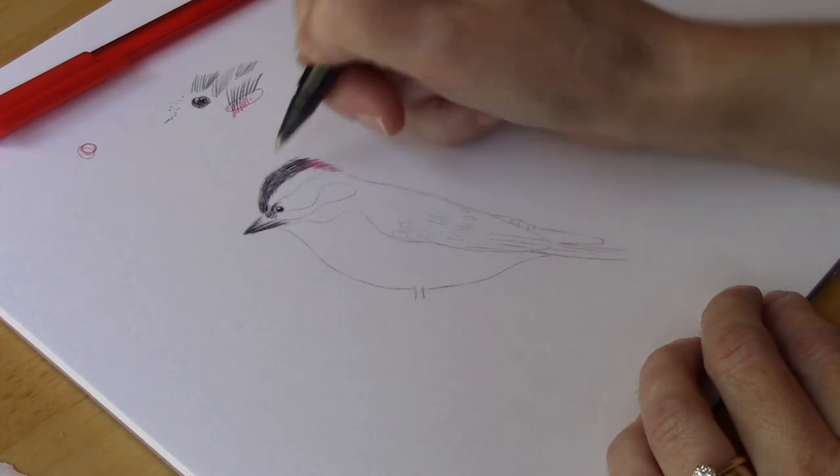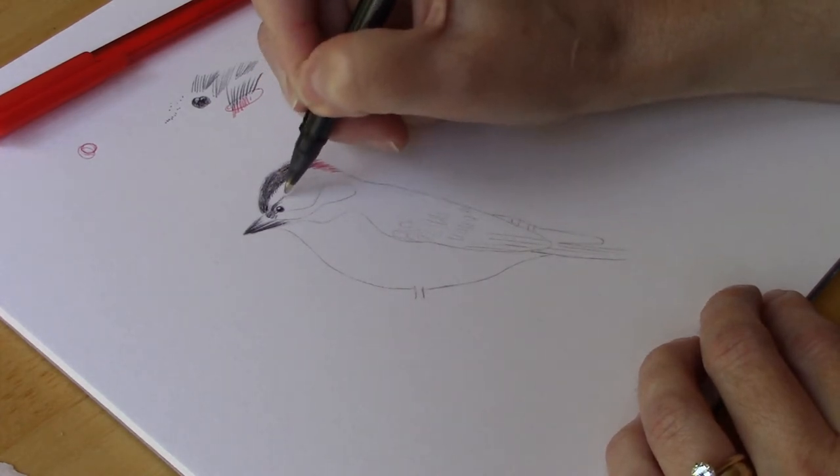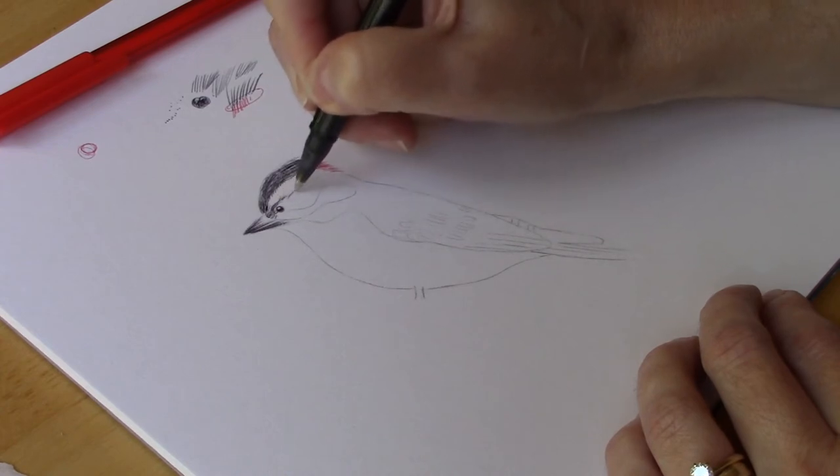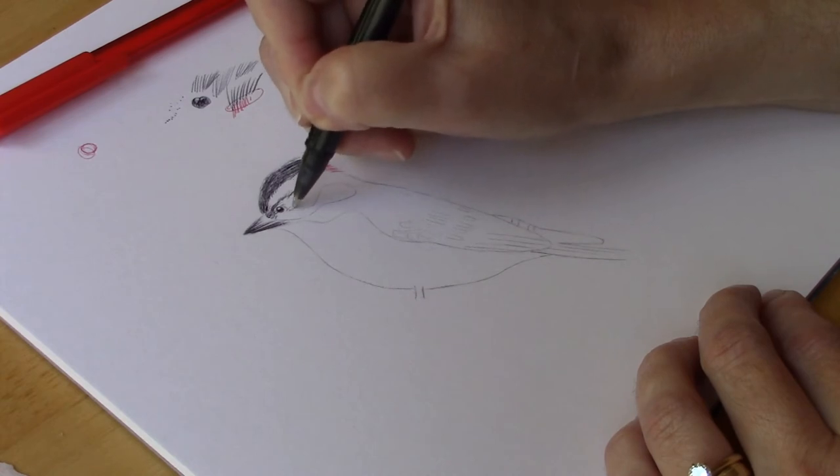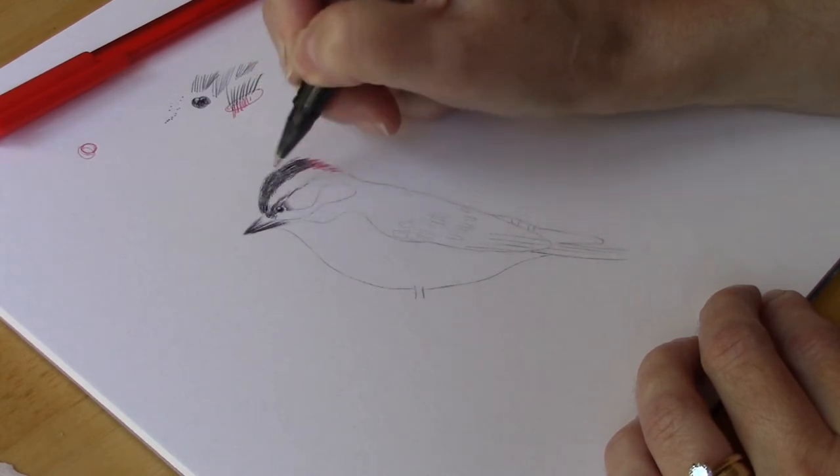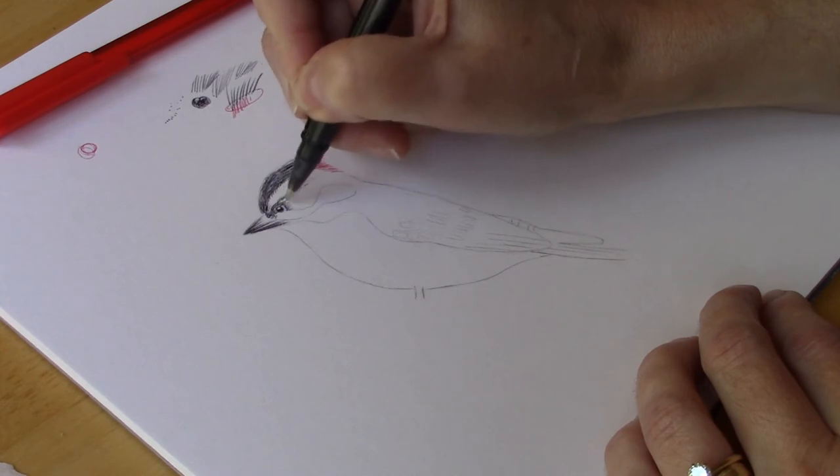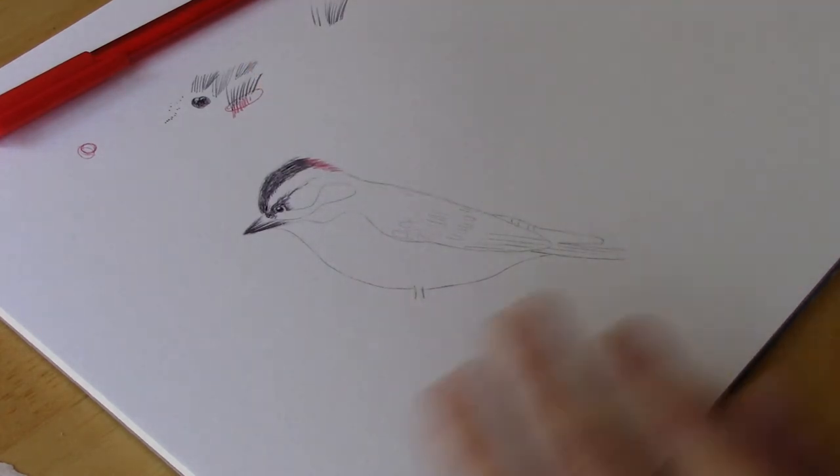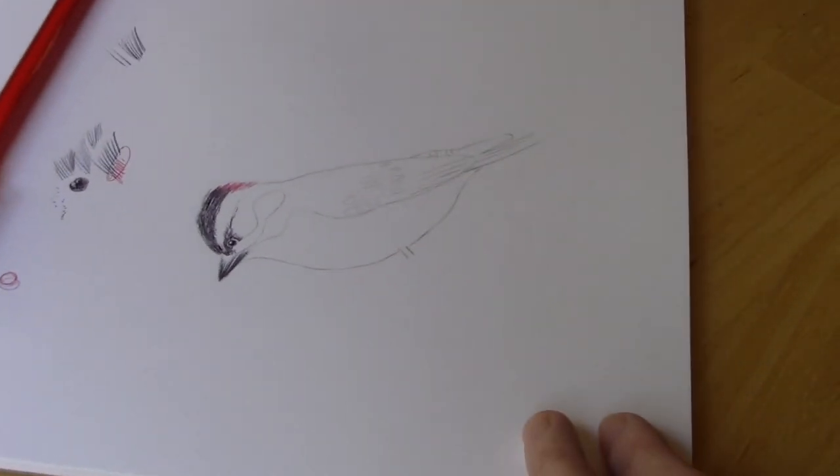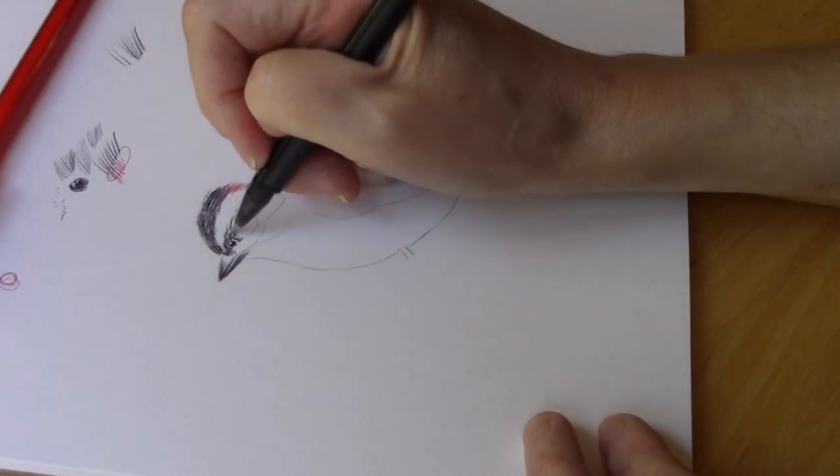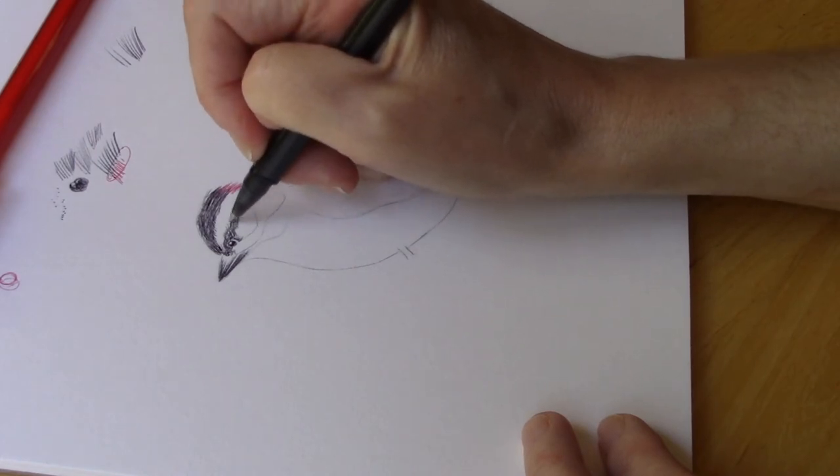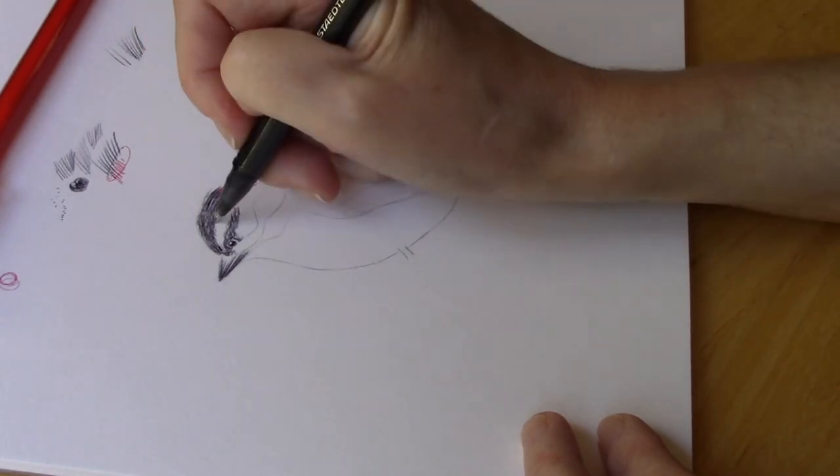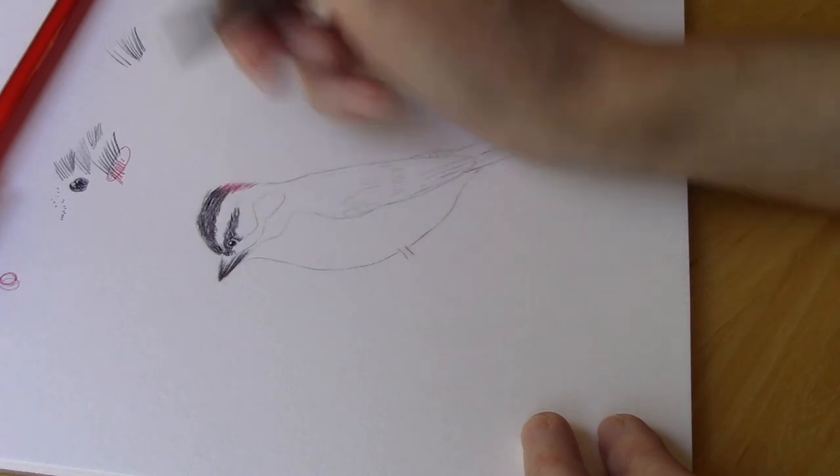I want him to look somewhat realistic and I'm going to leave some space around his eye. And if it's easier for you to turn your paper, you can turn your paper. I do that a lot. I'll turn my paper around, makes it easier for you.